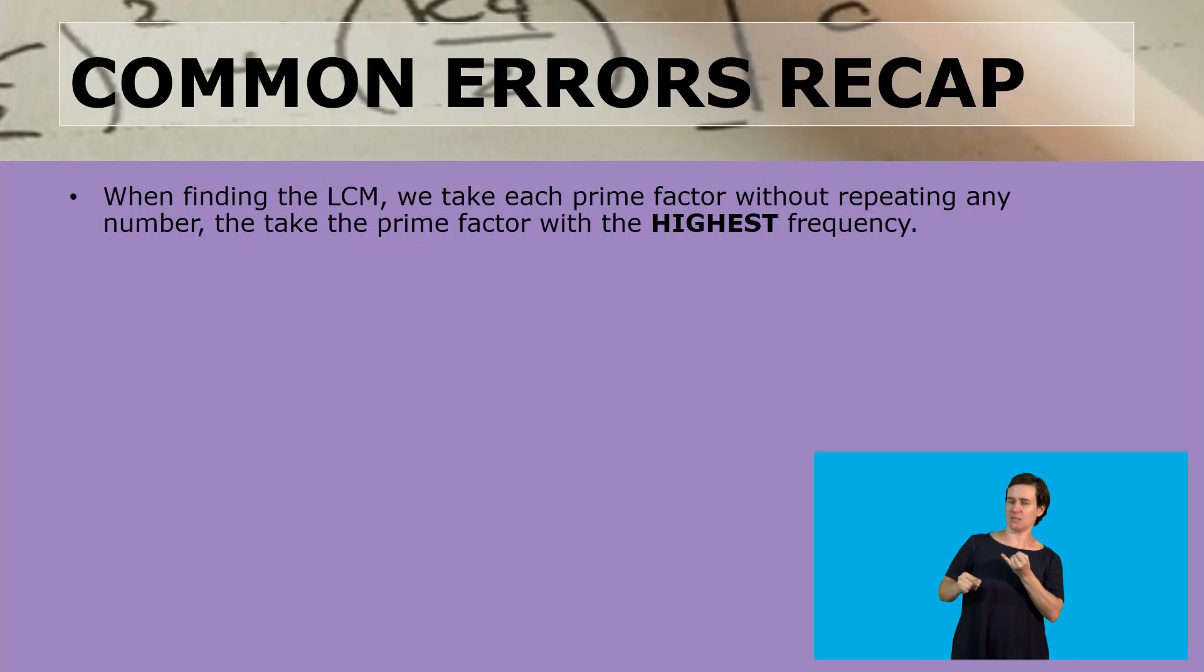When finding the lowest common multiple or LCM, we take each prime factor without repeating any number, taking the prime factor with the highest frequency. Remember, for the lowest common multiple we take the highest frequency and list all factors without repeating.